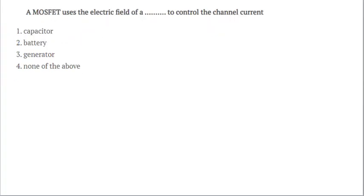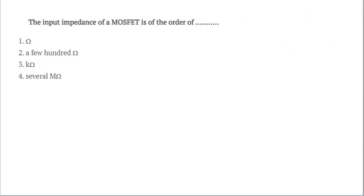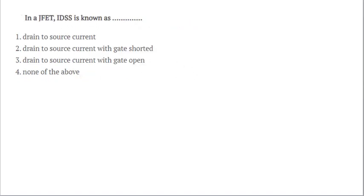Question number third: A MOSFET uses the electric field of a capacitor to control the channel current because the depletion region works here as a capacitor in MOSFET. Question number four: The input impedance of a MOSFET is in the order of several megaohms. I have already told you in the second question. In a JFET, IDSS current is the drain to source current when gate is shorted. Option two.